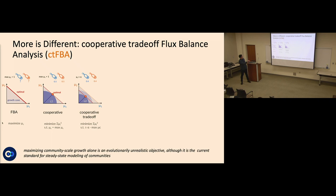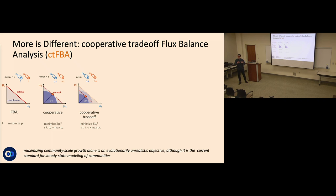For example, with two organisms, the maximal community growth is a line where you could pile all growth into organism one or organism two. Classical solvers often pick an edge solution where only one bug grows. We impose an L2 penalty that pushes things toward the center, and we use the observed abundance distribution as a constraint on that penalty — essentially pushing growth rates toward the observed abundance distribution, which we believe is a decent assumption.